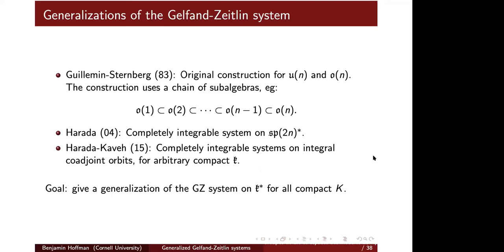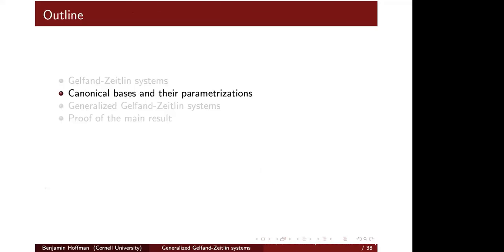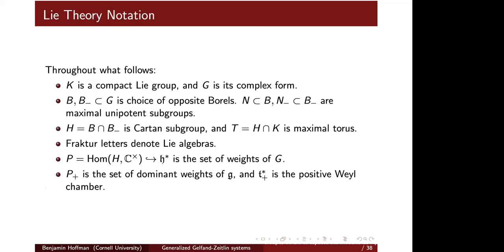Now I'll talk about canonical bases and their parametrizations. Standard Lie theory notation: K is always a compact Lie group, G is its complex form, B and B-minus are opposite Borels, N and N-minus are the maximal unipotent subgroups, H is the Cartan subgroup, T is the maximal torus, fraktur letters denote Lie algebras, P is the set of weights of G, P-plus is the set of dominant weights, and little t-star plus is the positive Weyl chamber.